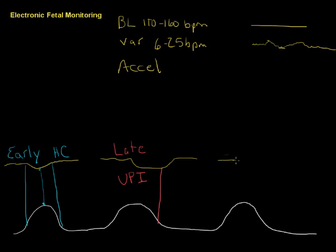The third kind of tracing that we think about is variables. These are an abrupt drop, abrupt recovery. They can occur anywhere in a contraction. They're often shaped like a V or a U, so abrupt, unlike a late and an early, which have this gradual change. This one is called a variable, and you can remember that by the V, shaped like a V.